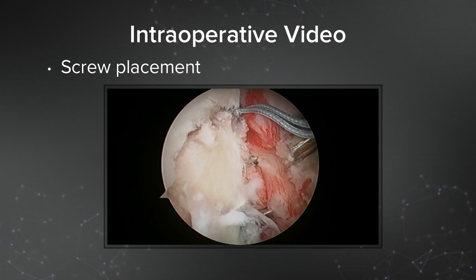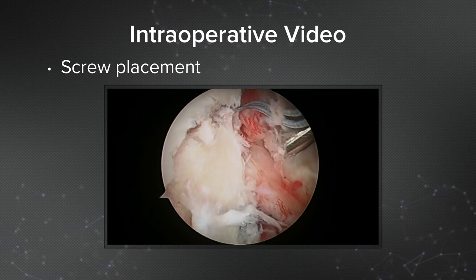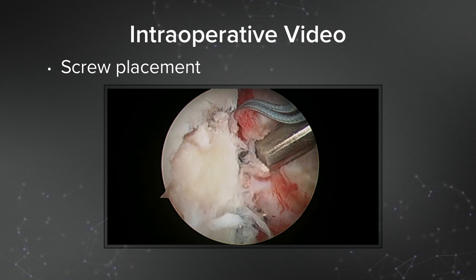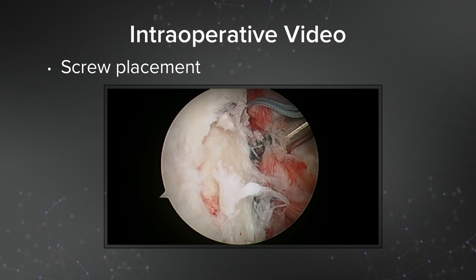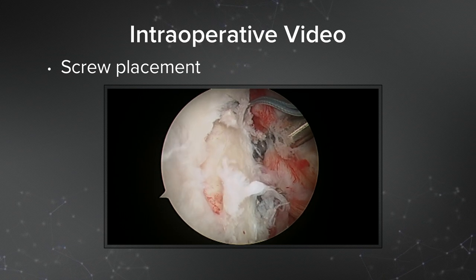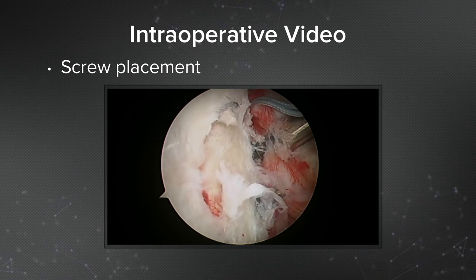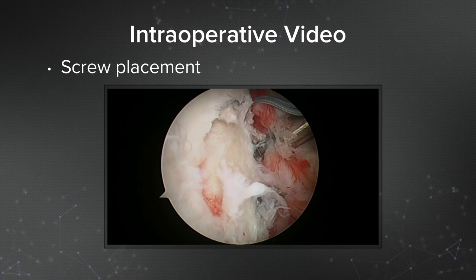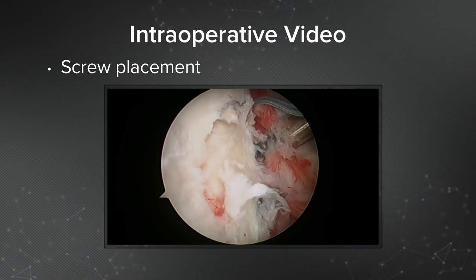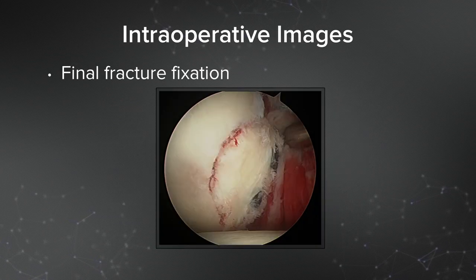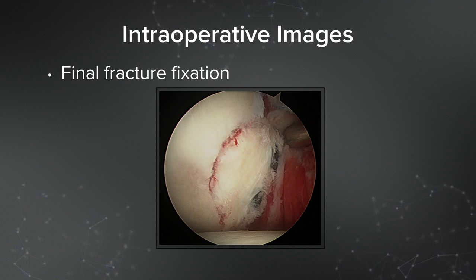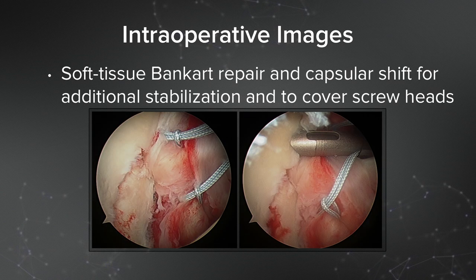Here is video of actual screw placement. I've retracted the soft tissue with the freer elevator, then I'm coming in by hand and gently placing the cannulated screw, which is a 3.75 cannulated screw. I've left the other pin in place while doing this so as not to disrupt the fracture. Here is a picture of the final fracture fixation — you can see this is an anatomic reduction, the screw heads are slightly countersunk. Then I perform a soft tissue Bankart repair and a capsule shift for additional stabilization to cover the screw heads.